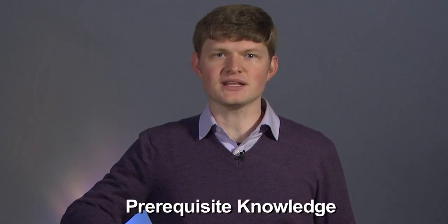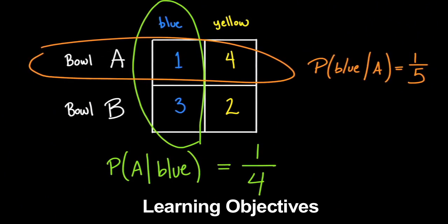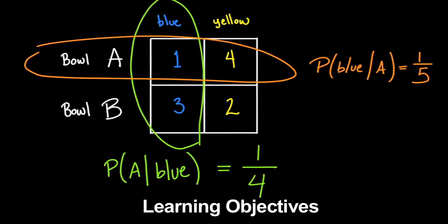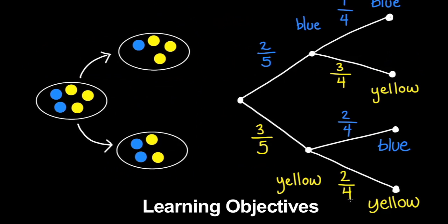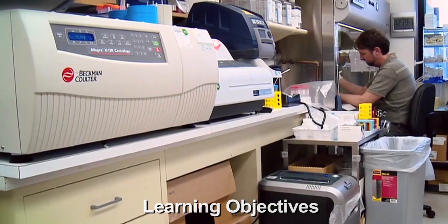Hi, my name is Sam Watson, and I'm a graduate student in mathematics at MIT. Before watching this video, you should be familiar with basic probability vocabulary and the definition of conditional probability. After watching this video, you'll be able to calculate the conditional probability of a given event using tables and trees, and understand how conditional probability can be used to interpret medical diagnoses.